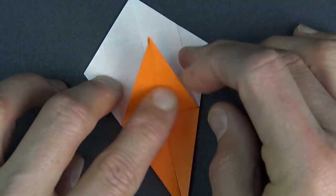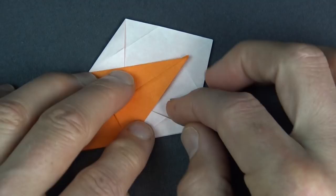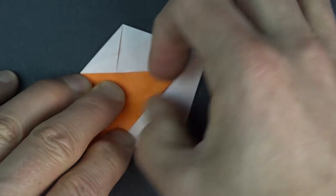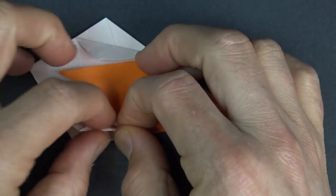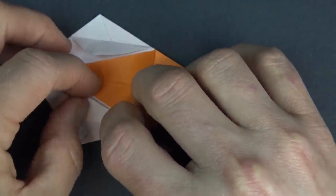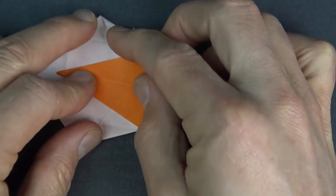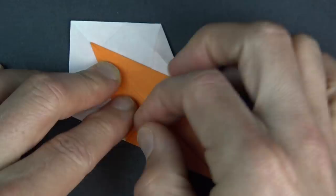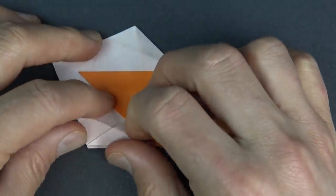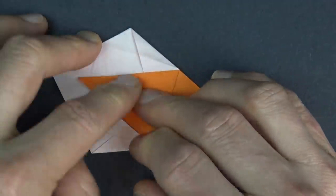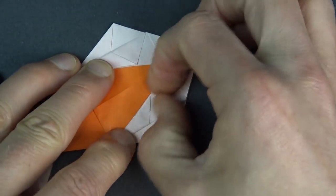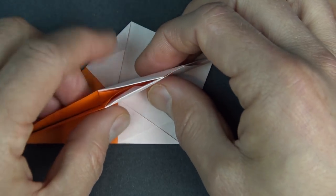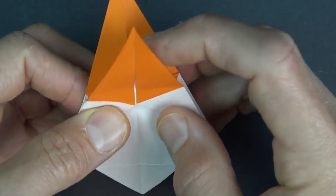Erase the crease by using your fingernail and just unfold these two flaps and turn over and repeat on this side. Erase the creases. Now bring these two flaps together and these two flaps together and bring these flaps down.